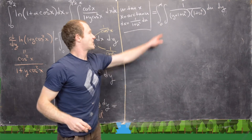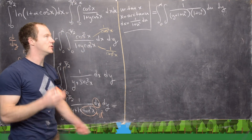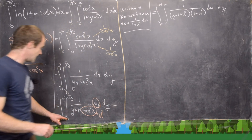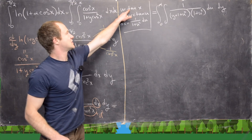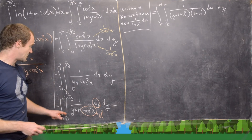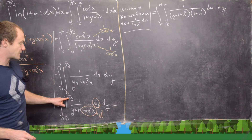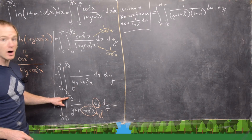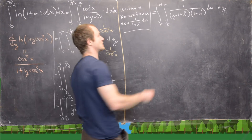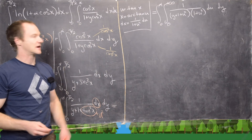Now I need the new bounds of integration in u. When x equals 0, tangent of 0 is 0, so u equals 0. When x approaches π/2 from below, tangent of x approaches positive infinity, because tangent has a vertical asymptote there. So the u bounds are 0 to infinity.